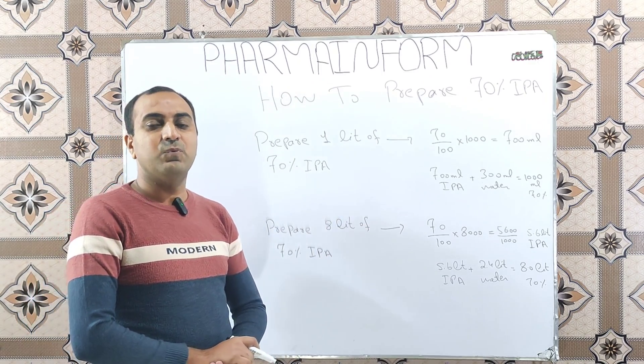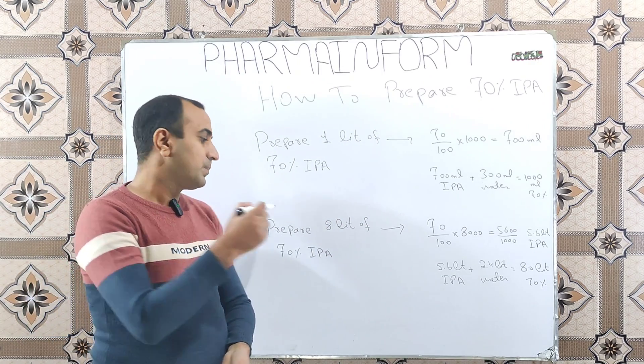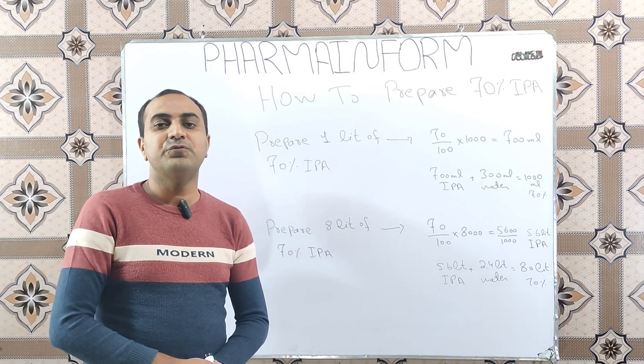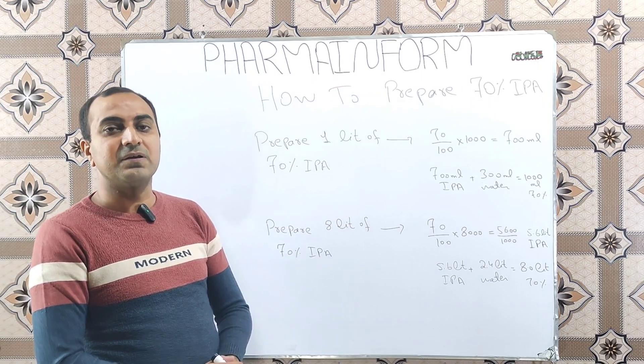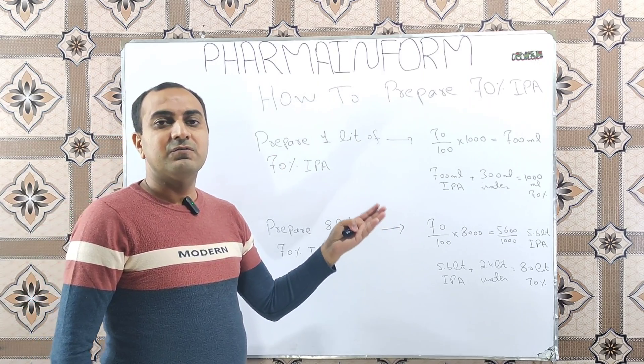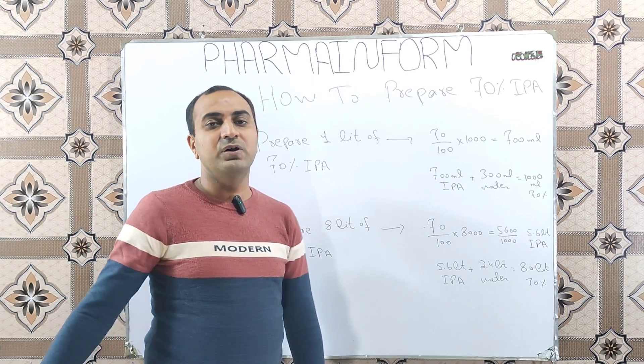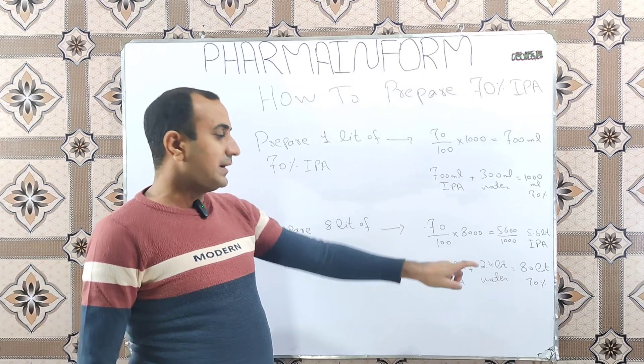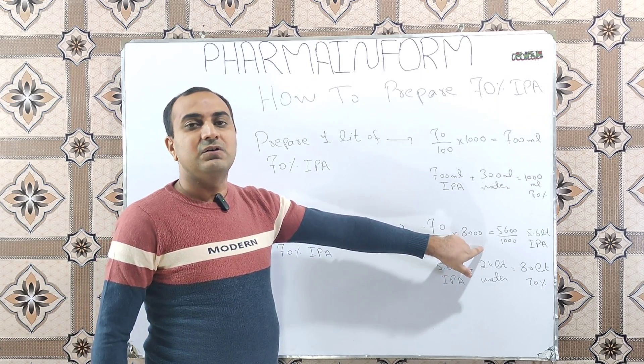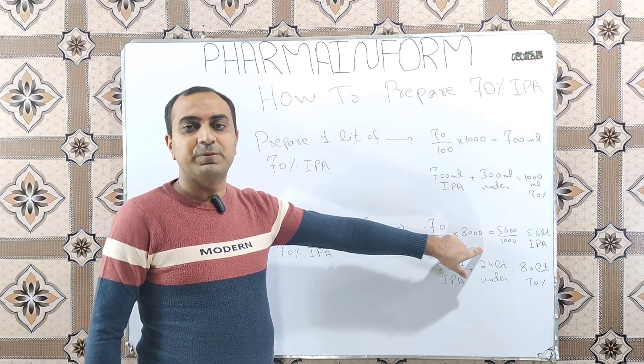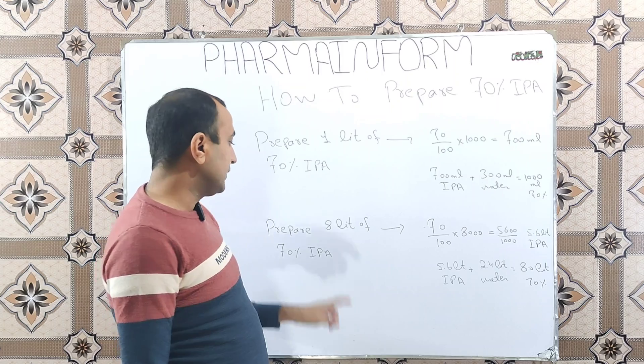Suppose we want to prepare 8 liters of 70% IPA. Simply, whatever the volume you want to prepare, divide 70 over 100 and then multiply the volume you want to prepare. If you want to prepare 8 liters...